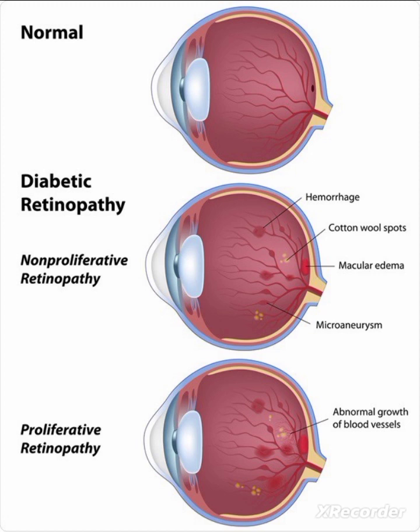In non-proliferative retinopathy, the blood vessels become occluded, leading to the development of microaneurysms. These microaneurysms are fragile, causing fluid to leak out and resulting in retinal edema. When observed through fundoscopy examination — dilated visual examination — we can see cotton wool spots, microaneurysms, and macular edema. Vision may be affected if the macula is involved.